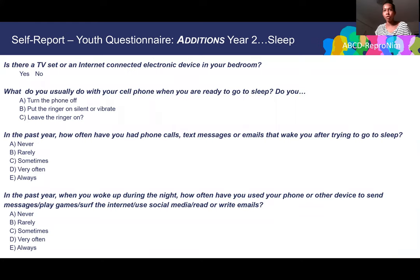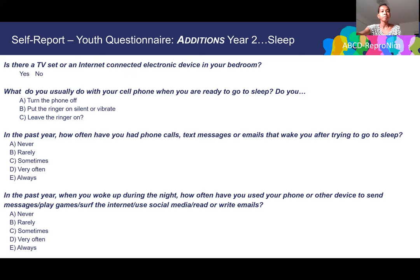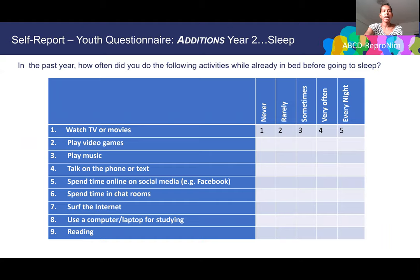Year two also added sleep-related questions: is there a TV or internet-connected electronic device in your bedroom? What do you usually do with your cell phone when ready to sleep — turn it off, put it on silent/vibrate, or leave the ringer on? How often in the past year have phone calls, texts, or emails woken you after trying to sleep? When you woke during the night, how often did you use your phone to send messages, play games, surf the internet, use social media, or read or write emails? A sleep questionnaire was also added asking how often, while already in bed before sleep, kids do activities including watching TV or movies, playing video games, playing music, talking or texting, social media, chat rooms, surfing the internet, or using a computer for studying.